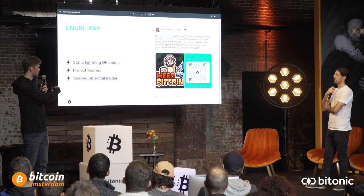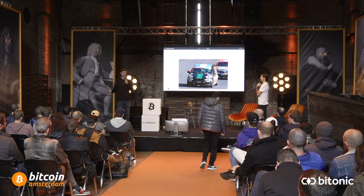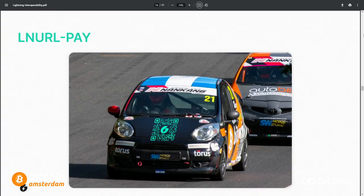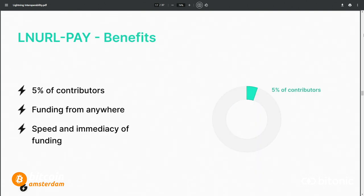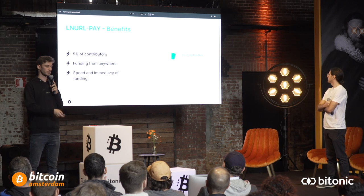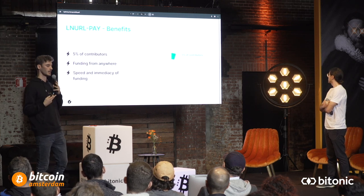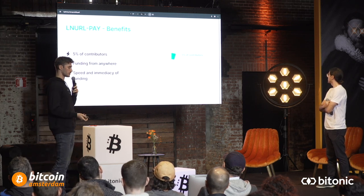One example: we've created Geyser posters — like this one for Hero of Bitcoin on Twitter — with a project description and a QR code. That QR code can be scanned by any Lightning wallet integrating LNURL Pay. Right from this slide you could scan it and send Satoshis to the project without ever going to Geyser. You could share it on Twitter, or put it on a racing car and fund the car as it races. With LNURL Pay, about 5% of contributors came through this route — funders who would not have existed without it.